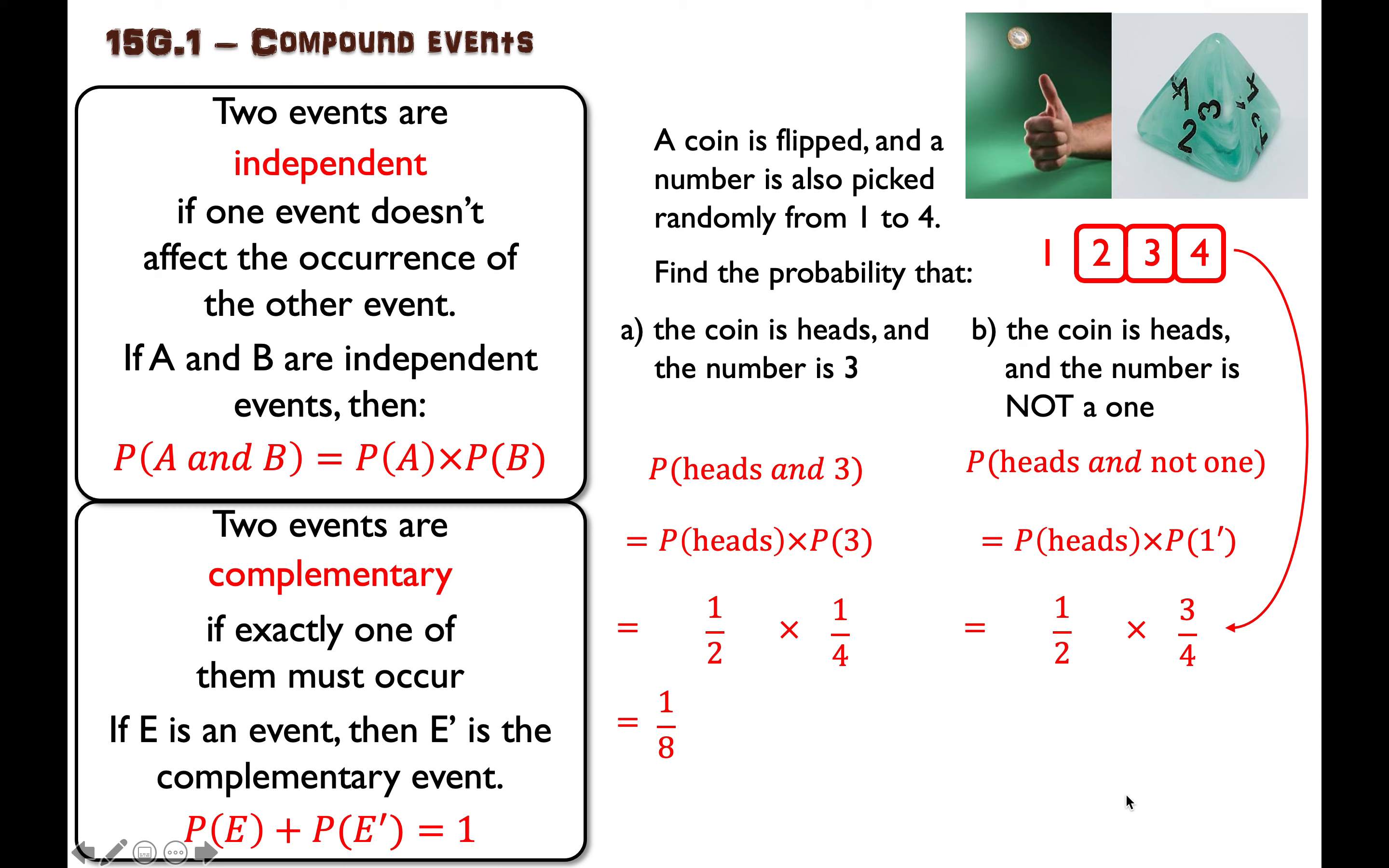And our last step, we can figure out the fraction. The numerator is one times three, which is three. The denominator is two times four, which is eight. And that's it.